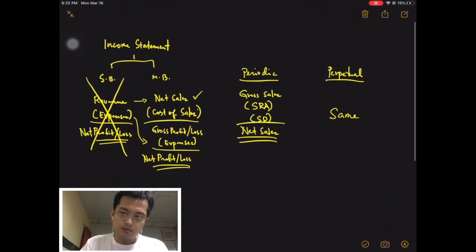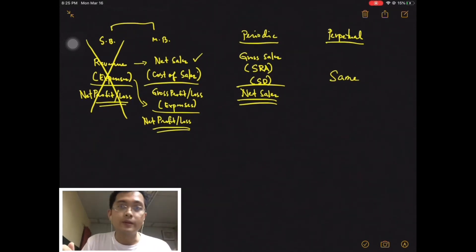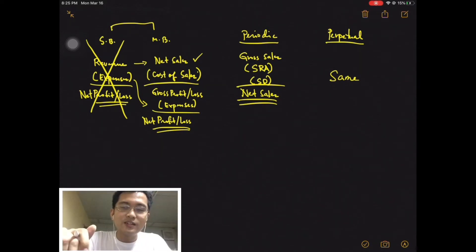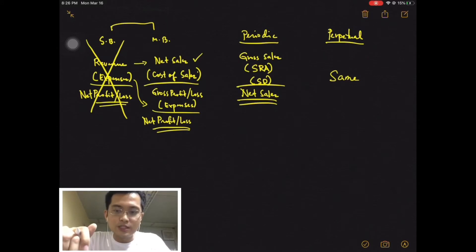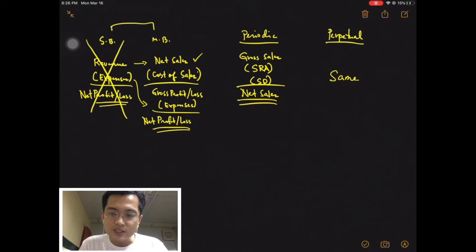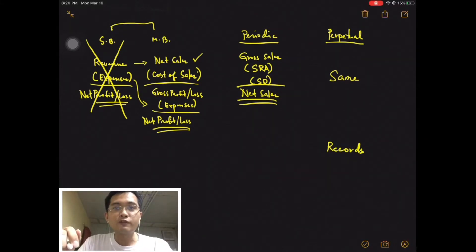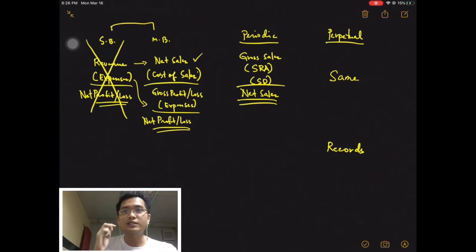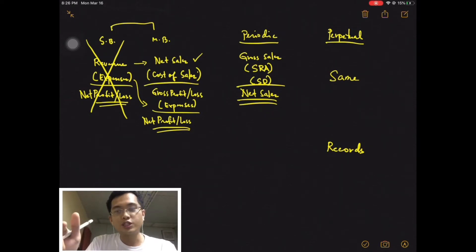Now how about cost of sales? This is where the difference comes in. Because under perpetual, if you can still recall your journal entry, you have a continuous recording of your cost of sales — you have the balance of your cost of sales every time, because every time you make a sale, you record cost of sales. So under perpetual, cost of sales can be determined via records or in your T-accounts. This is different for the periodic system, because if you look at your journal entries under the periodic system, never will you record cost of sales. To compute cost of sales in the periodic system, you have to make use of a formula.